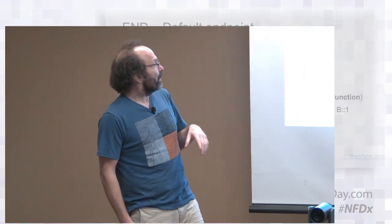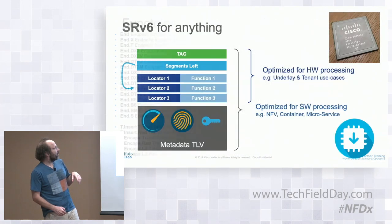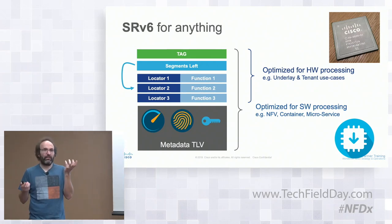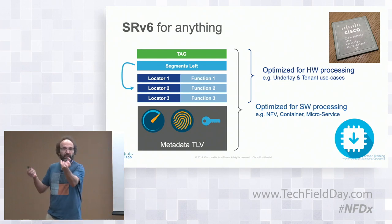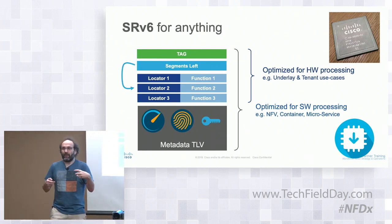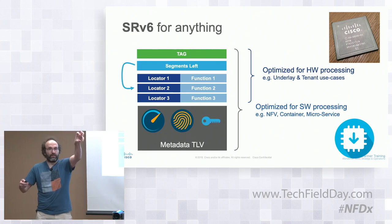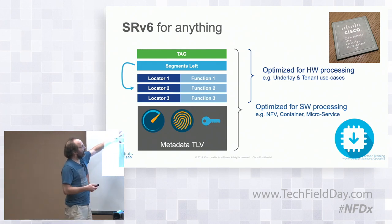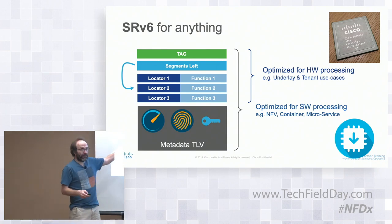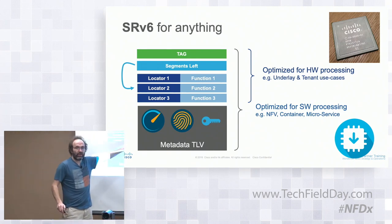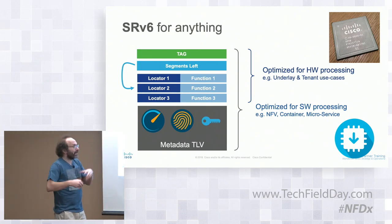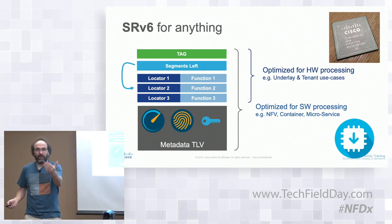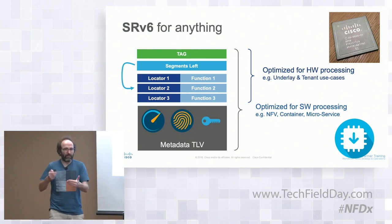There are no fixed boundaries—it just needs to be routable so the packet reaches the device that owns the function. This turns your network into a huge computer where different functions are located anywhere in the network, and packets traverse all those functions. Metadata TLVs can carry security information or usernames for all the functions.